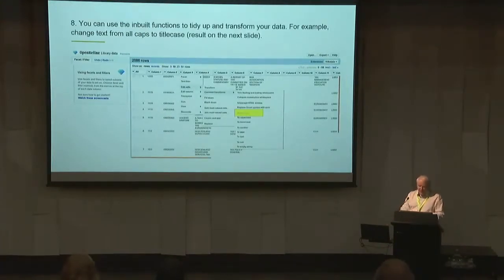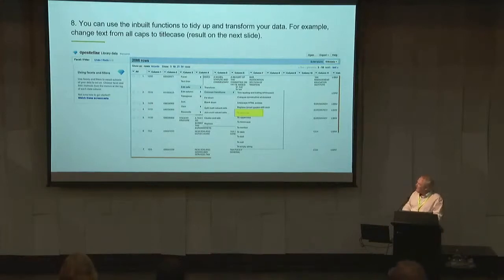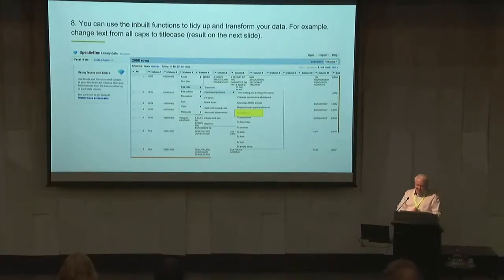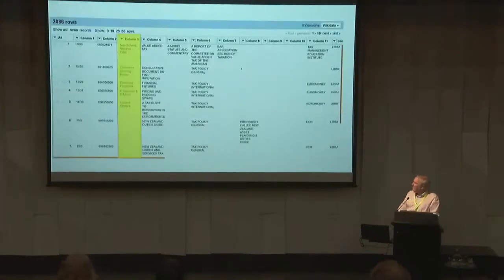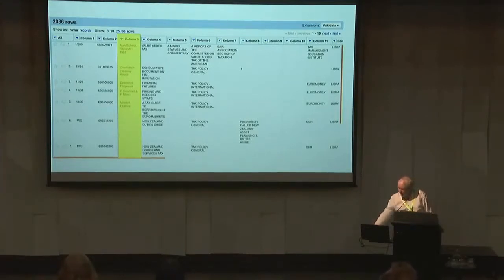A trickier thing — which you can still do in spreadsheets — is that one of those columns had everything in uppercase because it was a DOS program that didn't like lowercase or mixed case. I wanted column three in title case. You just do that transformation and that whole column — those 2,000 rows — are all nicely in title case. So you could go and do that in all your rows.